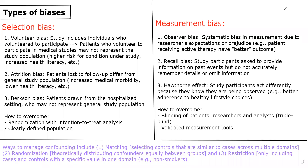Everyone, welcome to our video on types of biases. So in the internal validity, external validity, and biases lecture, we talked about the three main types of bias, which are selection bias, measurement bias, and confounding. So we're going to go through a few examples of each.